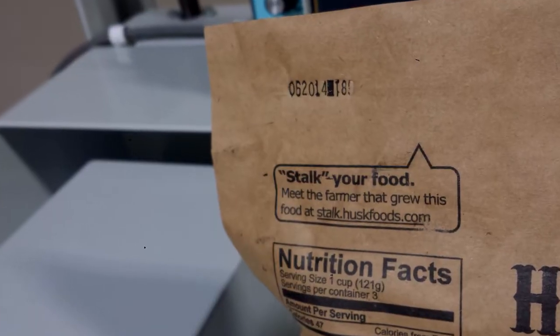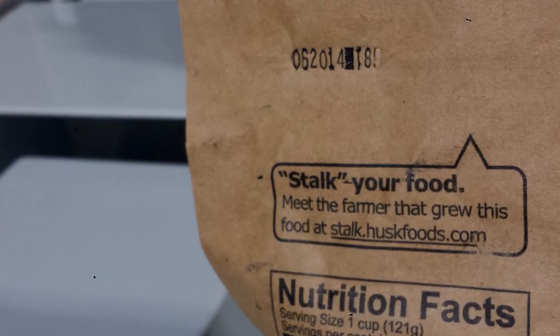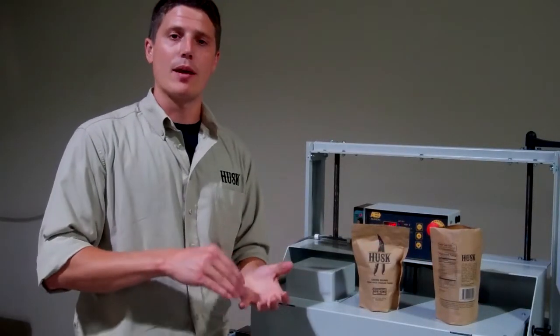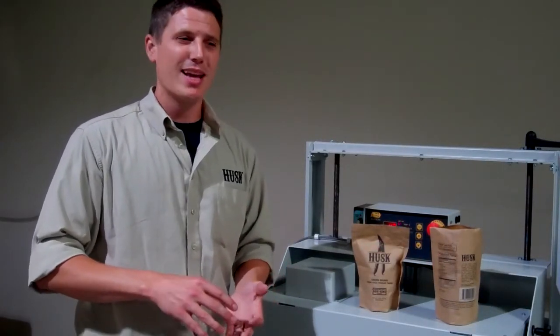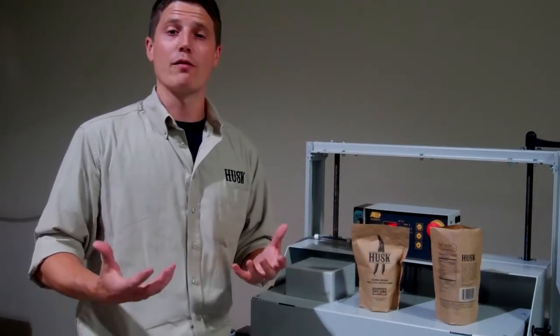What's called a crop stalker code—you can stalk your crops. It's a numeric code. It's very simple. You go to our website and that code will tell you exactly what farm that product came from, the day it was picked. You can reach out and talk to the farmers that grew the food. That's the important part about local: knowing your farmer.